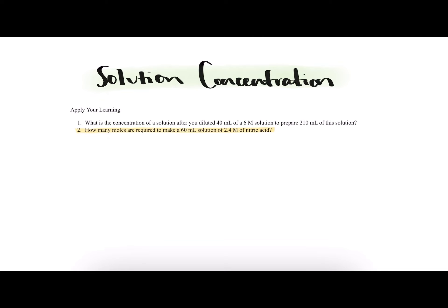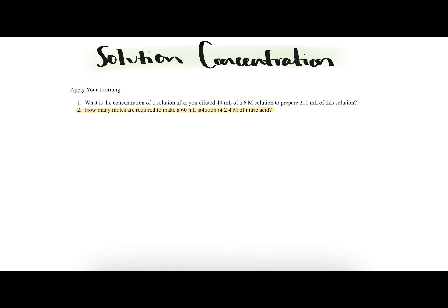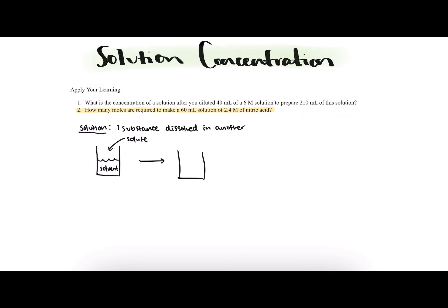Before we start with the question, there's a little bit of background knowledge that will be important. First, we need to know what a solution is. A solution is made when one substance is dissolved in another. We can break it down further: the substance being dissolved is called the solute, and the substance doing the dissolving is called the solvent. Together they mix to make one homogeneous solution.